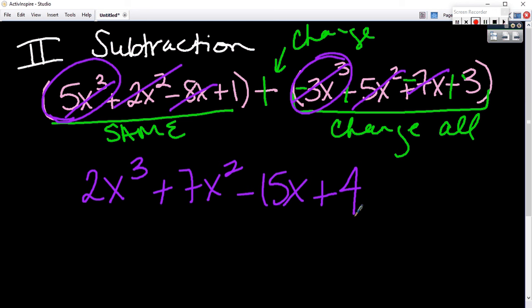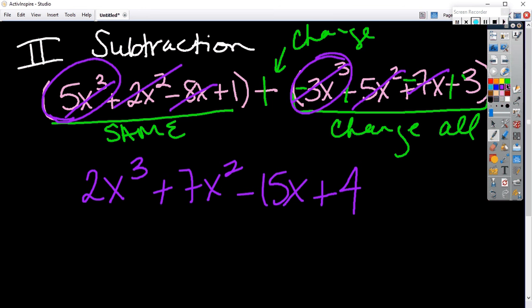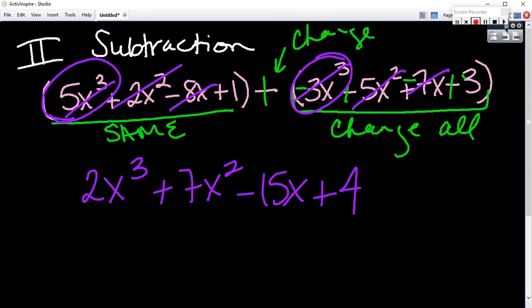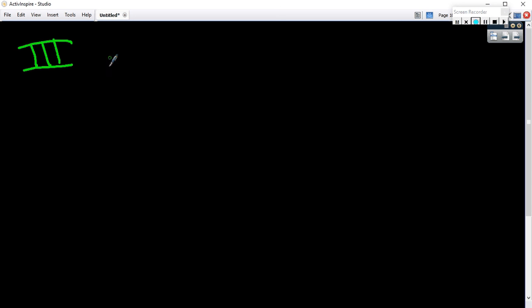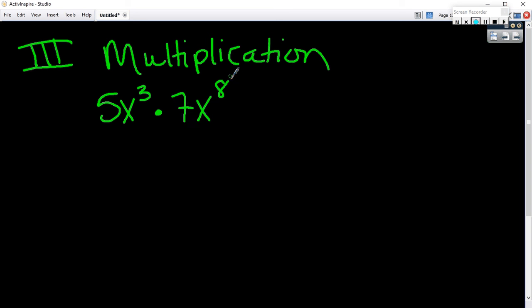We're still right on time. I want to be done by 9. Multiplication. So before I show you the whole polynomial, let's talk about what happens when we multiply terms. In other words, if we multiplied 5x to the third times 7x to the eighth. What do you do?